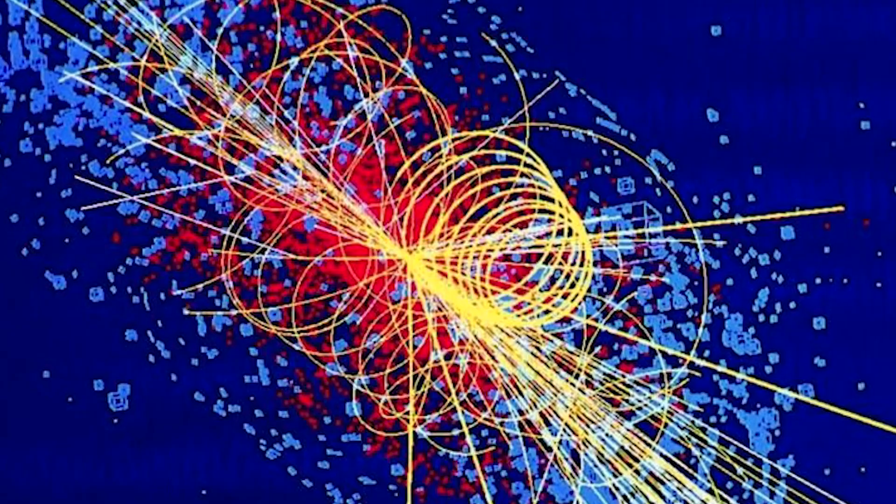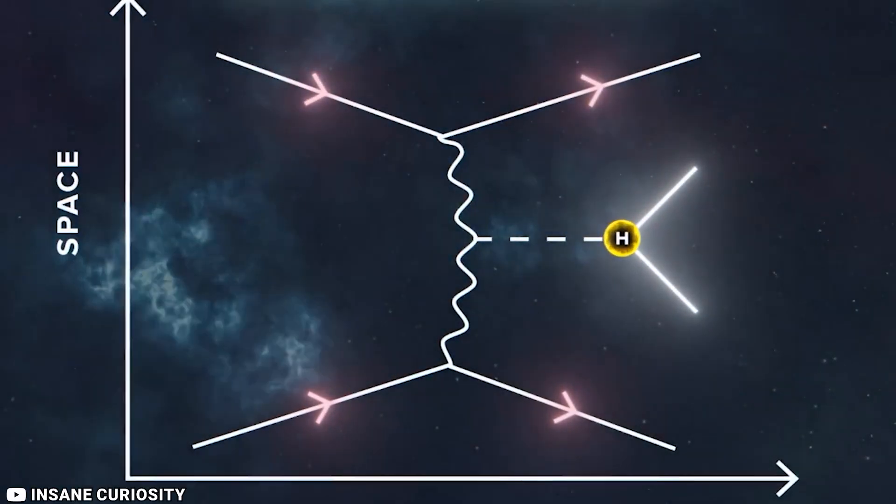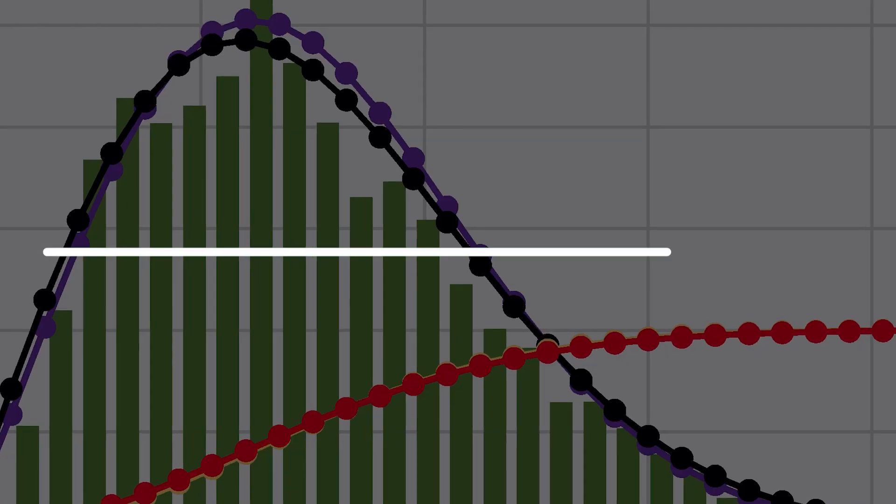In contrast, a Higgs boson has a mass of around the same as an iodine atom, or 125 billion electron volts.